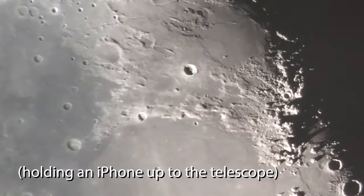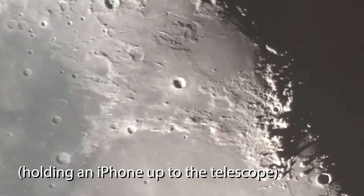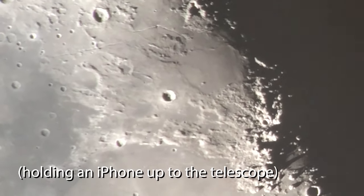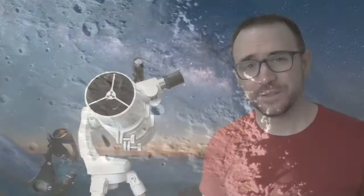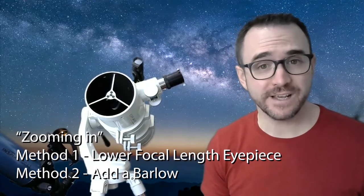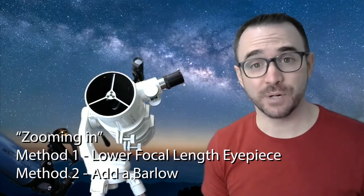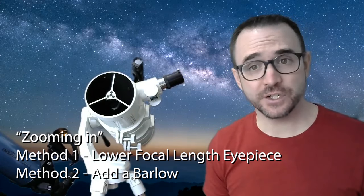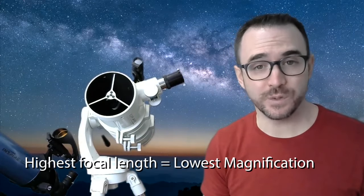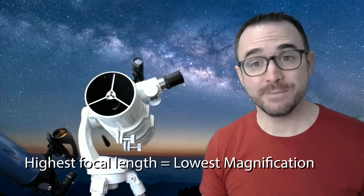Now, the best part of observing the moon is getting those up-close views so you can really appreciate the mountains and craters as if you're in a spaceship flying over the moon's surface. You zoom in in two primary ways. The first is by changing to an eyepiece with a lower focal length, and the second is adding a barlow. Now, as I said earlier, you always want to start with the lowest powered eyepiece. That makes things easier to find even if you're just finding the moon. If you lose your target, it's always best to return to this configuration and start over.